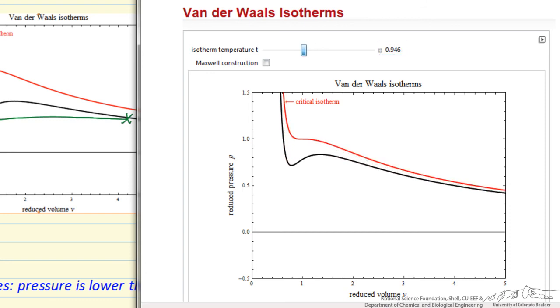If we lower the reduced temperature, then we can see below the critical point we start having three solutions. And if we draw the point where the area above and below the curve is equal, then we've identified for that particular temperature the saturation conditions.